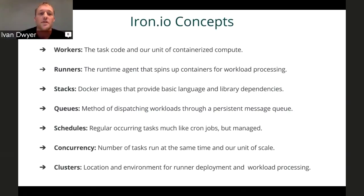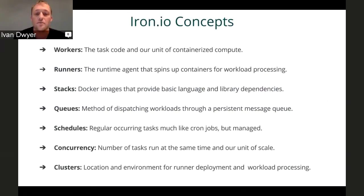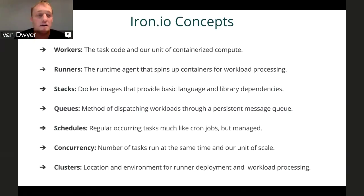In our world, we have a number of key concepts. We call the task code units 'workers' — a unit of containerized compute. We have 'runners,' which are the runtime agents that spin up containers and process workloads. 'Stacks' are the base language and library dependencies as Docker images — so if I want to run Ruby 2.1, I choose the Ruby 2.1 stack. 'Queues' dispatch workloads through our message queue service. 'Schedule' is much like cron but managed in the cloud. 'Concurrency' is how many tasks run at the same time — concurrent, not parallel. 'Clusters' are the location environment for the runners.